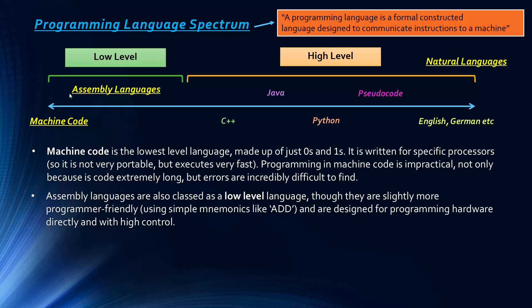Assembly languages are classed as a low level language. They are slightly more programmer friendly because they use mnemonics like ADD, replacing machine code with words to make it easier for programmers. They're designed for programming hardware directly, giving lots of control over registers. People also use assembly language for programming small, simple embedded devices like microcontrollers, because you don't need many commands and they're relatively simple.